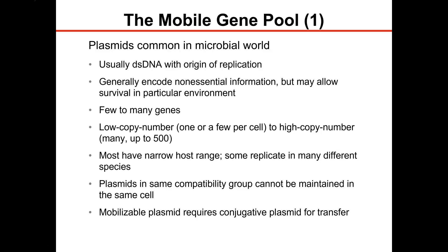Most plasmids have a very narrow host range, whereas some plasmids can move from one species to a totally different species of bacteria. Plasmids can move from one cell to another via conjugation if they have the fertility factor associated with them.